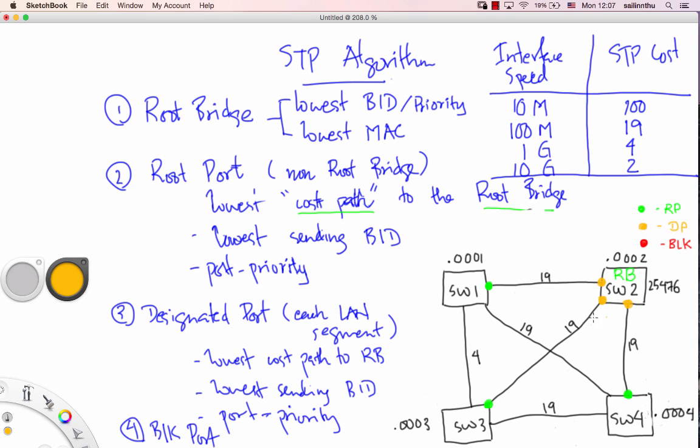Using the root bridge, only the lowest cost path to the root bridge will be selected. So the root bridge, one that you listen to, the root bridge, the only one is the designated port.